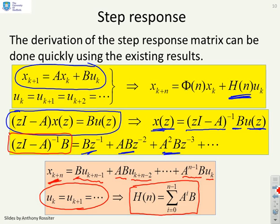H(n) is the sum from 0 to n-1 of A^i B. So, again, you've got a relatively simple expression. Not easy to calculate on pen and paper, but easy to write down and implement on a computer.